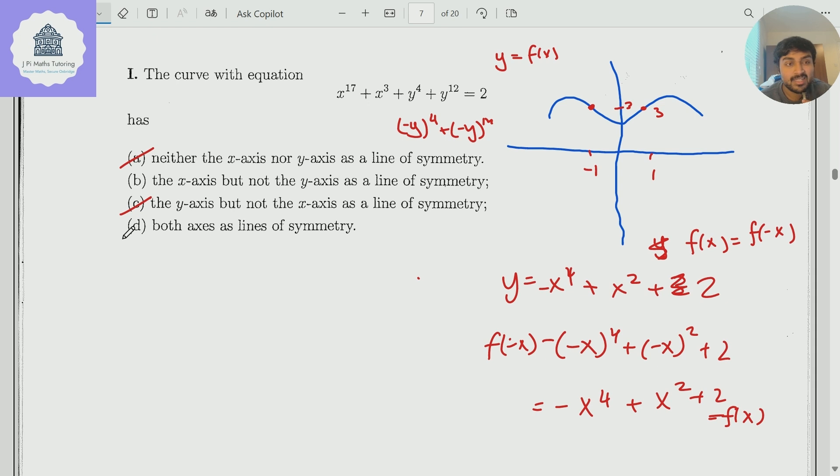So I can get rid of those two options. But if I replace x with minus x, then this becomes minus x to the 17 and minus x cubed. And those are different to x cubed and x to the 17. And so it doesn't have symmetry in the y-axis. So the answer here is b.